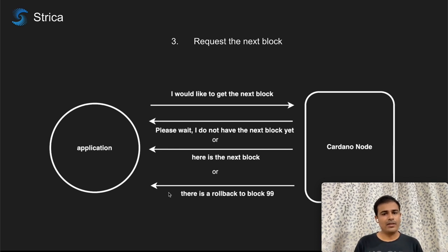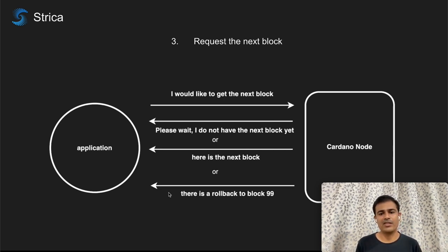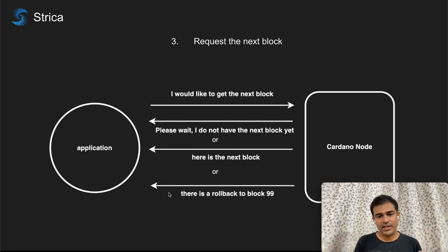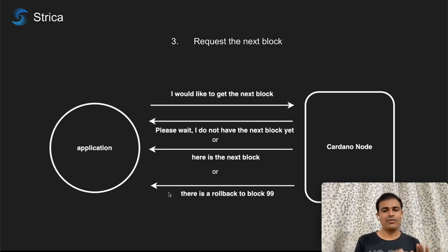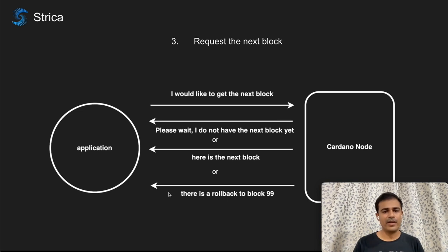The third step of using the chainsync protocol is actually syncing the blocks. If the Cardano node has confirmed block 100, you can ask for the next block. The node will return the next block, or if it doesn't have it yet, it will ask you to wait and will send it once available. While syncing — going through blocks 101, 102, 103 — if a rollback happens on the network, the Cardano node will send an intimation telling you to roll back to a specific block number, and your application must handle that logic before resuming syncing.